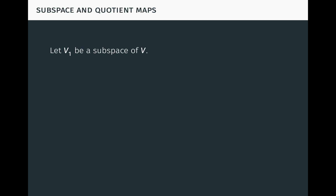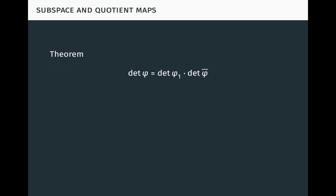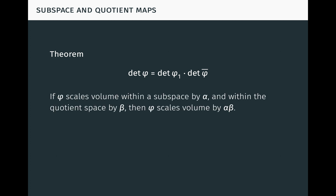Let V1 be a subspace of V. If phi maps V1 into itself, there are induced subspace and quotient transformations phi1 on V1 and phi-bar on V/V1 making a commutative diagram, where phi1(x) = phi(x) for all x in V1 and phi-bar(x-bar) = phi(x)-bar. We have a theorem: the determinant of phi equals the determinant of phi1 times the determinant of phi-bar. This tells us that if phi scales volume within a stable subspace by alpha and within the quotient space by beta, then phi scales volume in the whole space by alpha times beta.